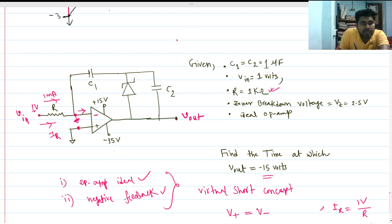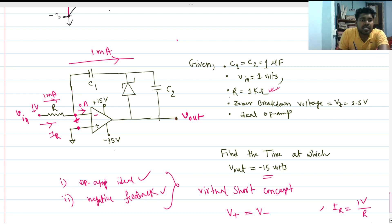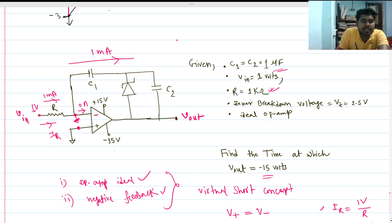We know that no current can pass into the op-amp terminal, so all of the current has to pass through the capacitor path. The constant current passing through capacitor C1 is also 1 milliamp. Both capacitors, ignoring the Zener diode, are in series and have the same capacitance, so both charge equally. Current passes through them in this direction.